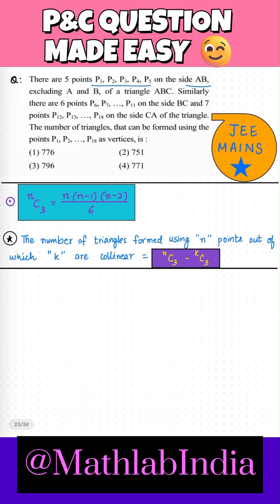So here in this question, there are 5 points P1 to P5 on the side AB, excluding A and B. Similarly, you have 6 points on the side BC and 7 points on the side CA.